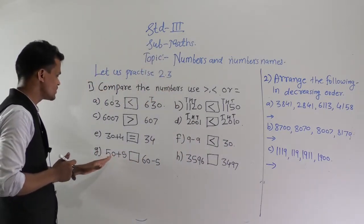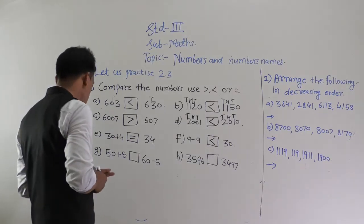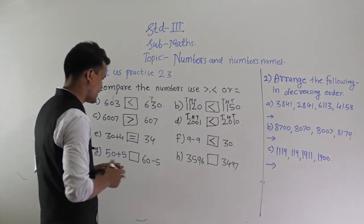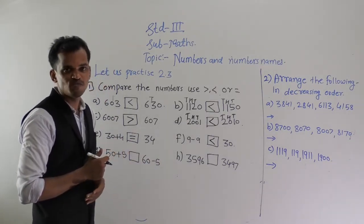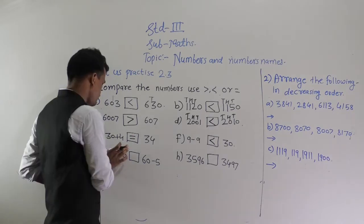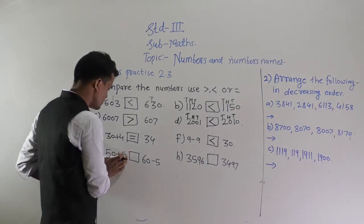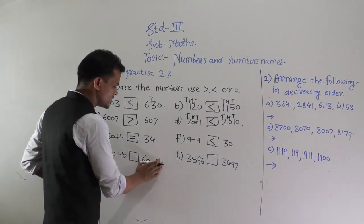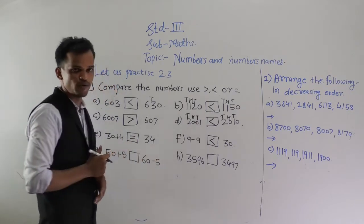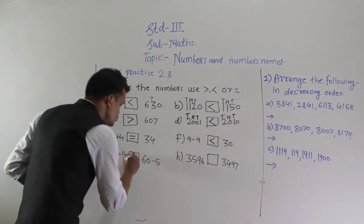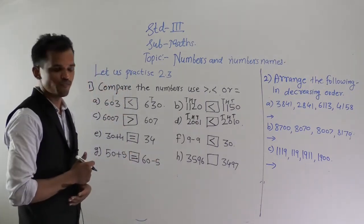Next, compare 50 + 5 and 60 − 5. So 50 + 5 = 55, and 60 − 5 = 55 as well. The addition of these two numbers is 55 and the difference of these two numbers is also 55. So use the equal to sign.